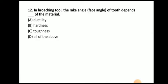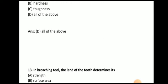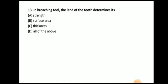Next question: in a broaching tool, the rake angle of the tooth depends on what property of the material — ductility, hardness, or toughness? The answer is all of the above. The rake angle of the tooth depends on the ductility, hardness, and toughness of the material to be machined.